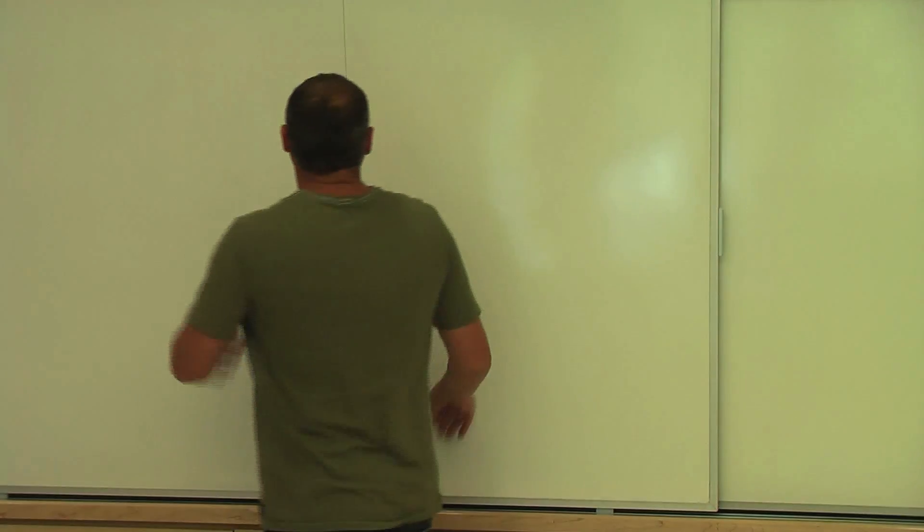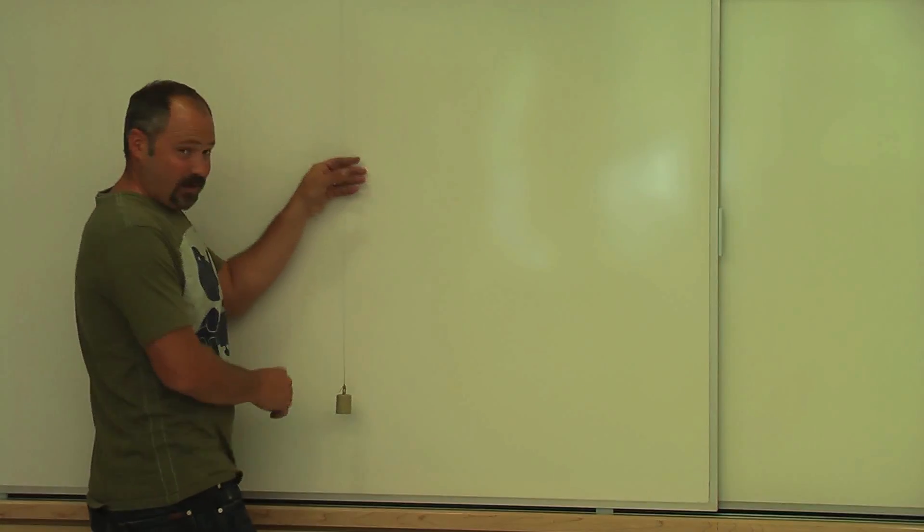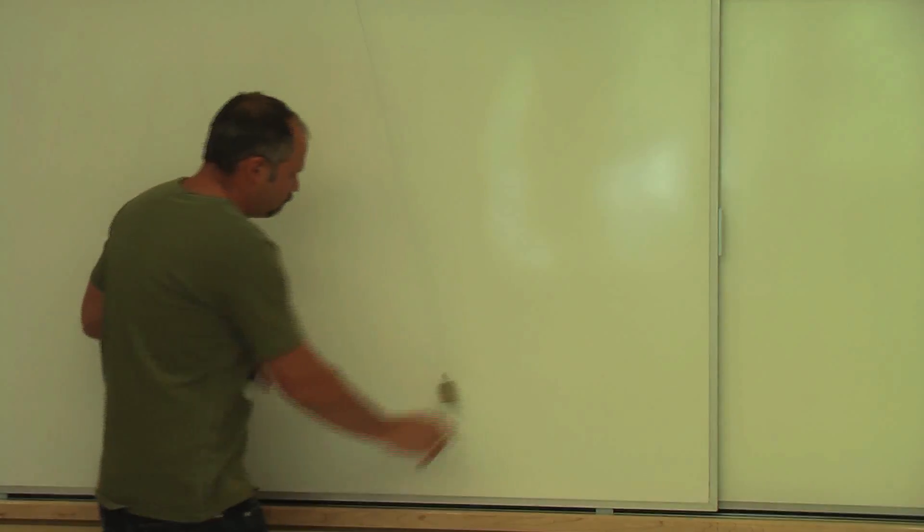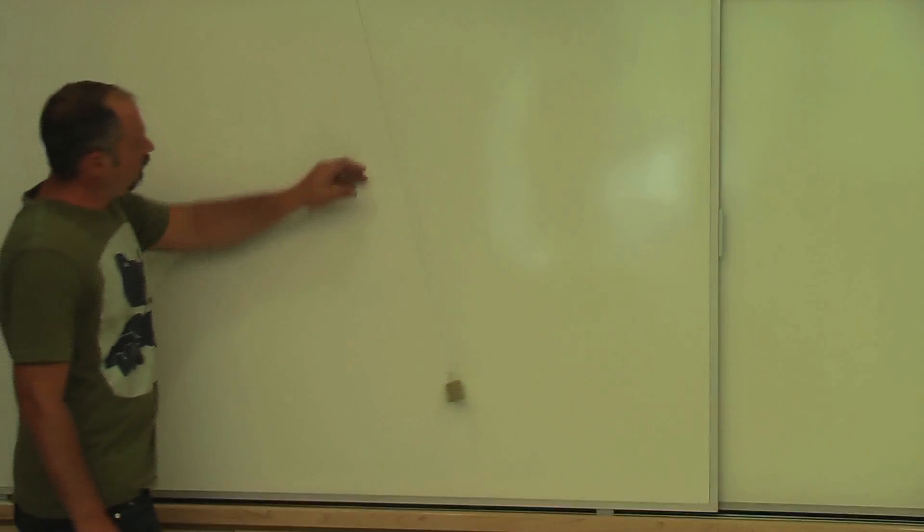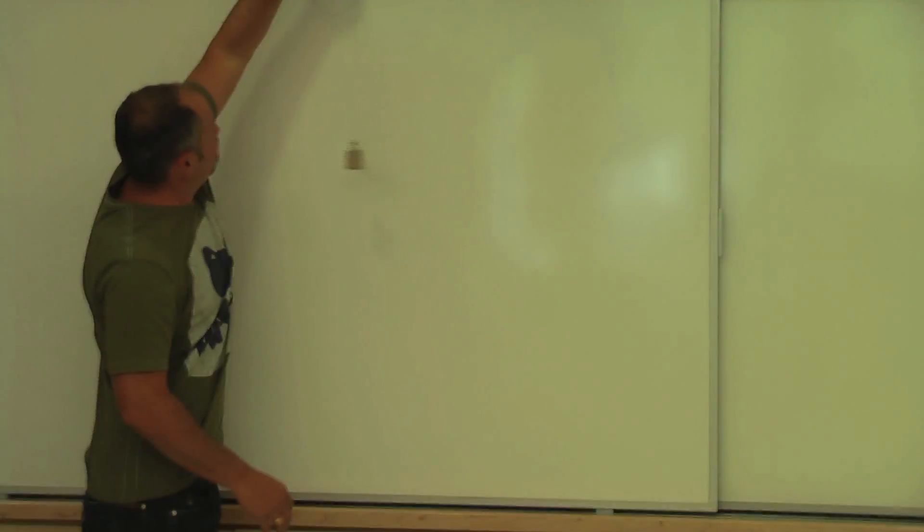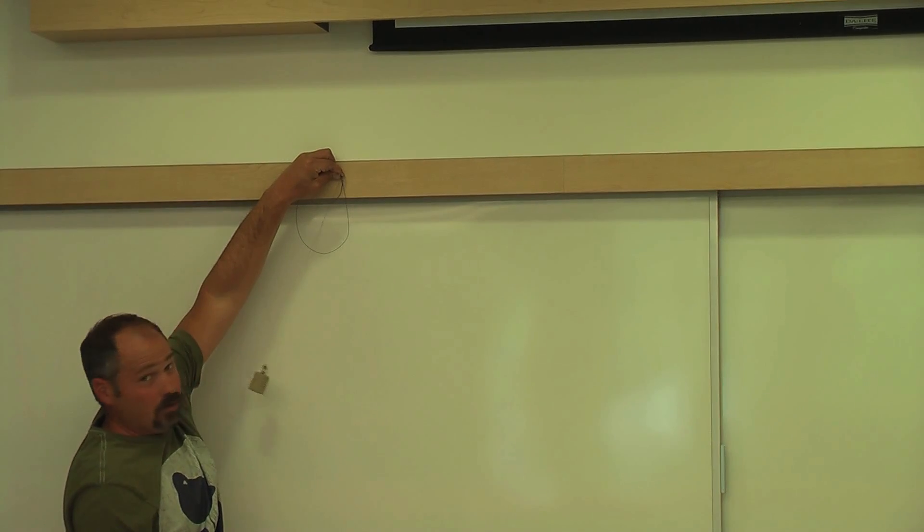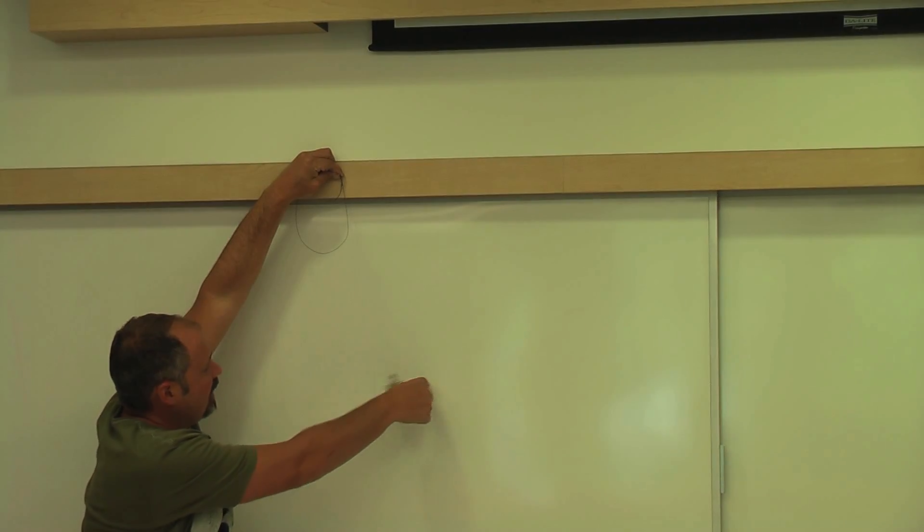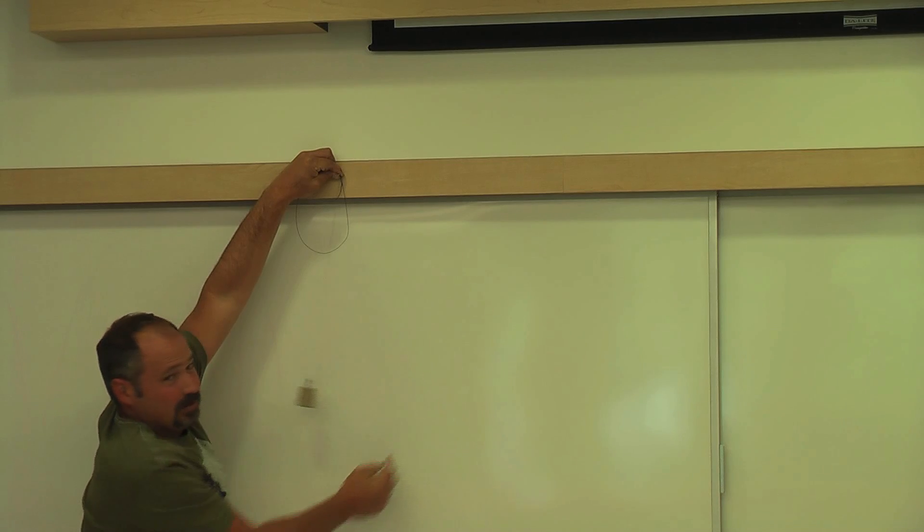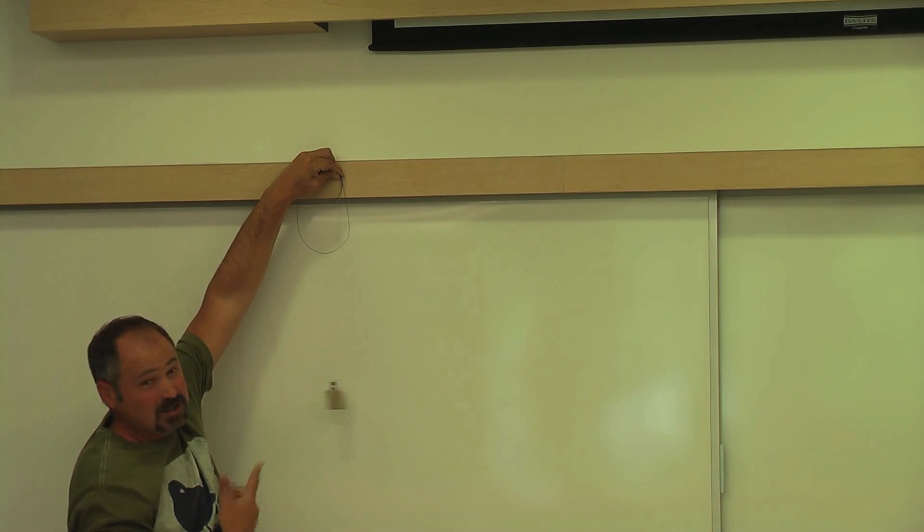Now, let's see how the period is affected by the length of the string. So you can see this motion. Well, what happens if I cut the length in half? How does the period change? We can see it takes much less time to do one cycle, which tells us the period is smaller.